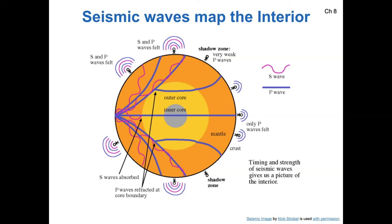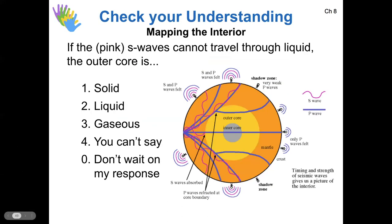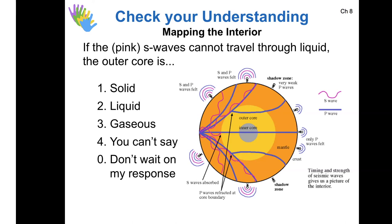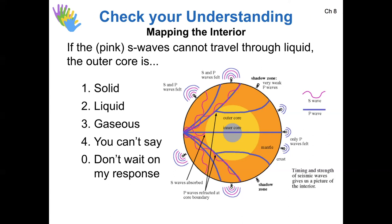So the logical step toward mapping the interior is that we remember that our S waves, these pink waves, they cannot travel through liquid. So what does this mean about the composition of our outer core? Okay, it looks like now we are unanimously in agreement that if the S waves can't travel through liquid, well, it looks like they're not traveling through the outer core. So the outer core must be made of liquid. So this is correct.